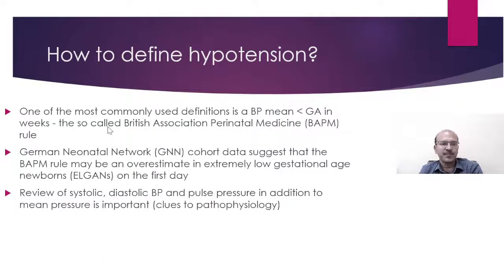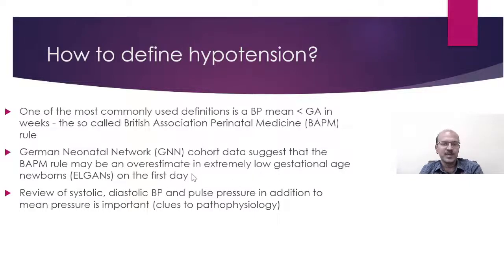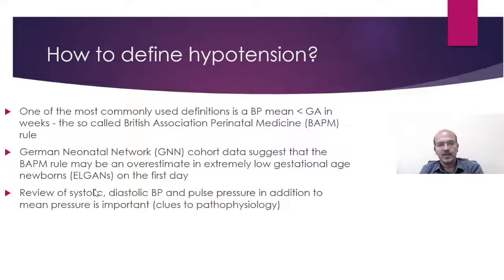How do we define hypotension? There is no clear definition. One of the most commonly used definitions is mean blood pressure less than gestational age — the so-called BAPM rule. The German Neonatal Network data suggested the BAPM rule may overestimate in extremely low birth weight babies on the first day. The review of systolic, diastolic, and pulse pressure in relation to mean pressure is important as it gives clues to pathophysiology. You may have a normal mean pressure but very low systolic where it is usually a contractility problem, or a very wide pulse pressure with low diastolic giving a clue to the etiology.